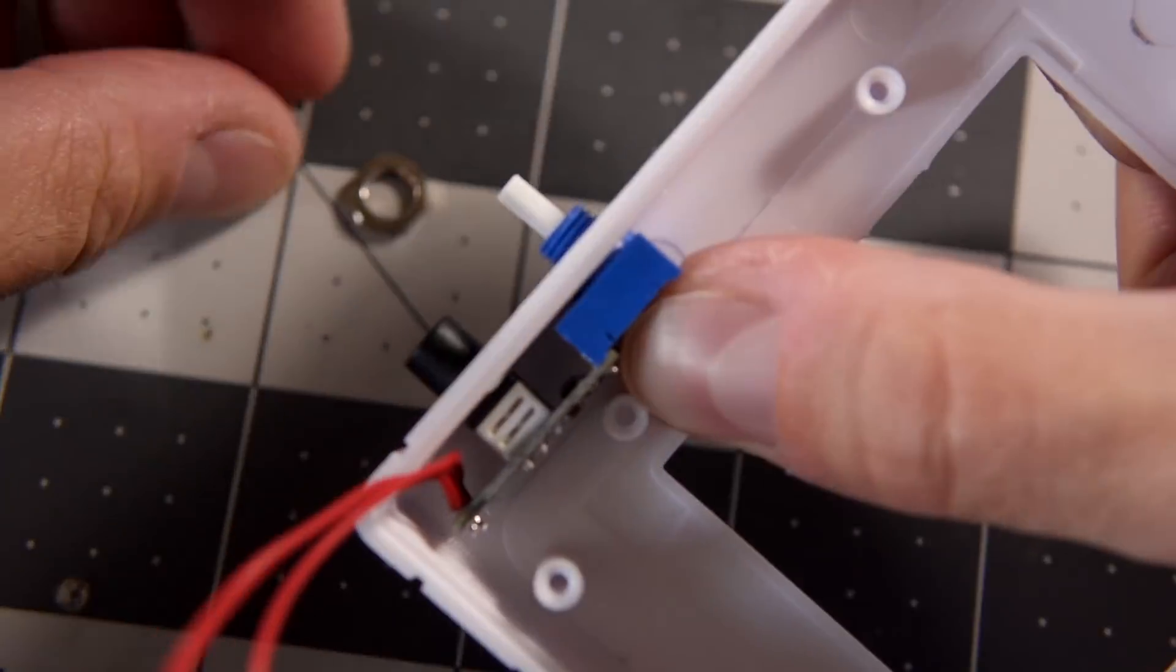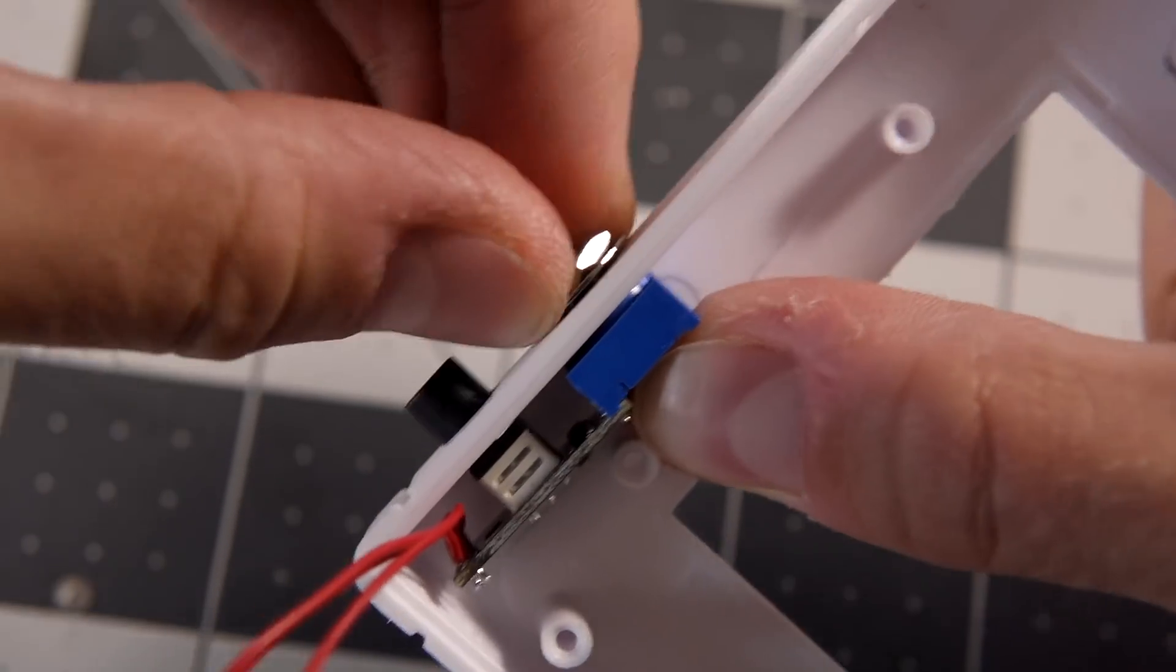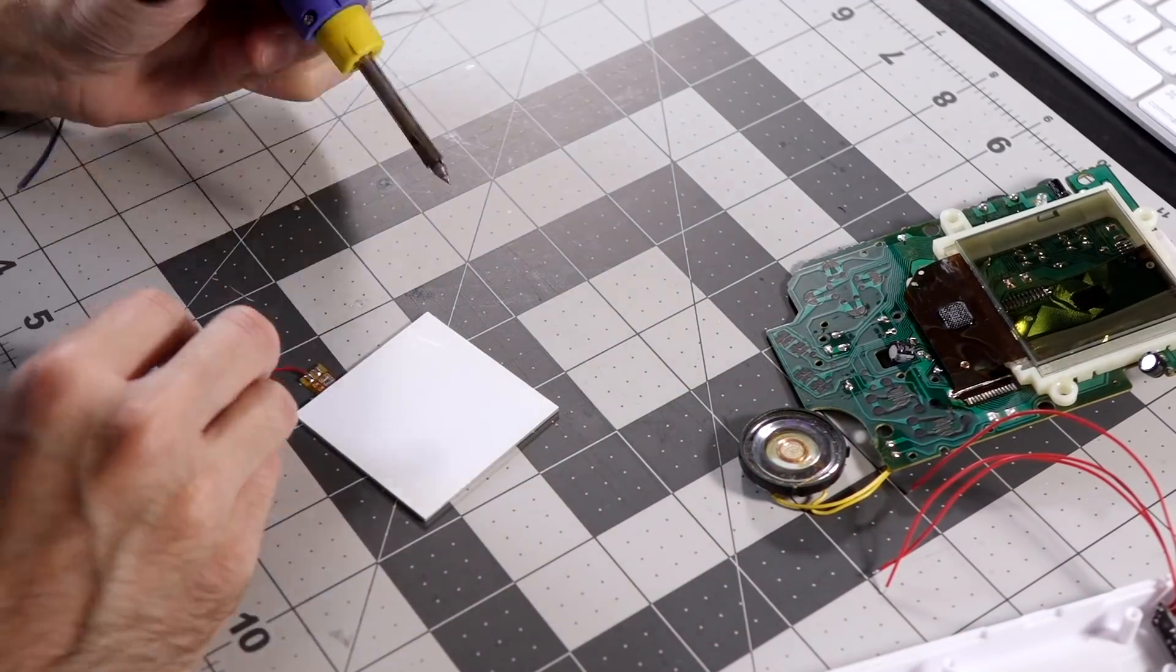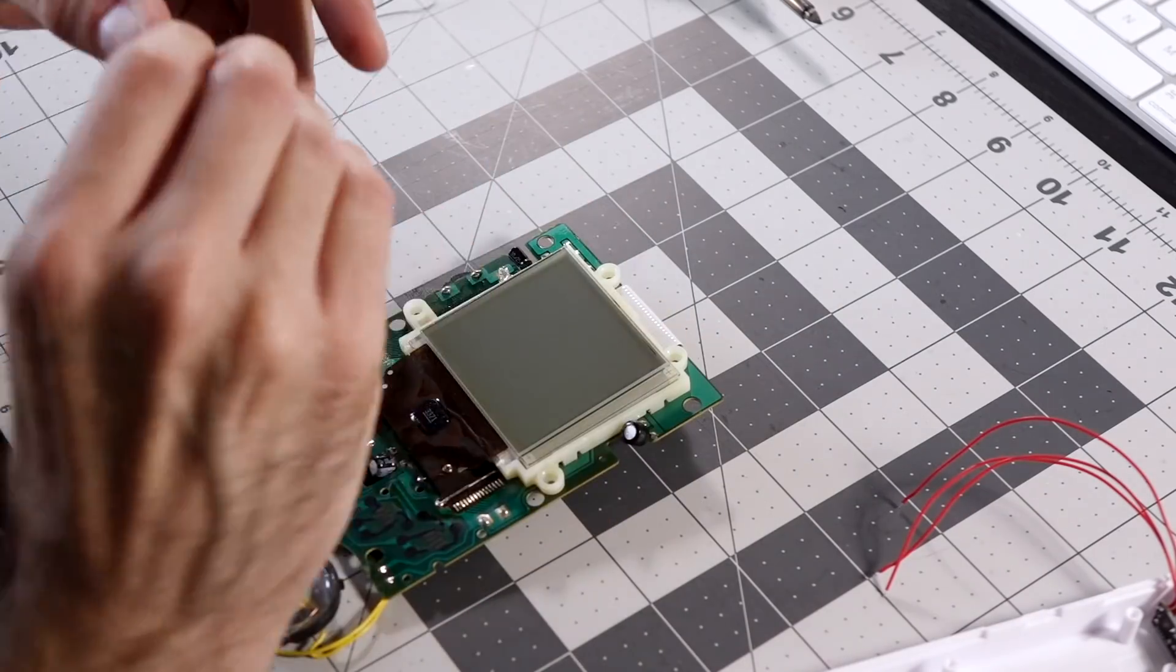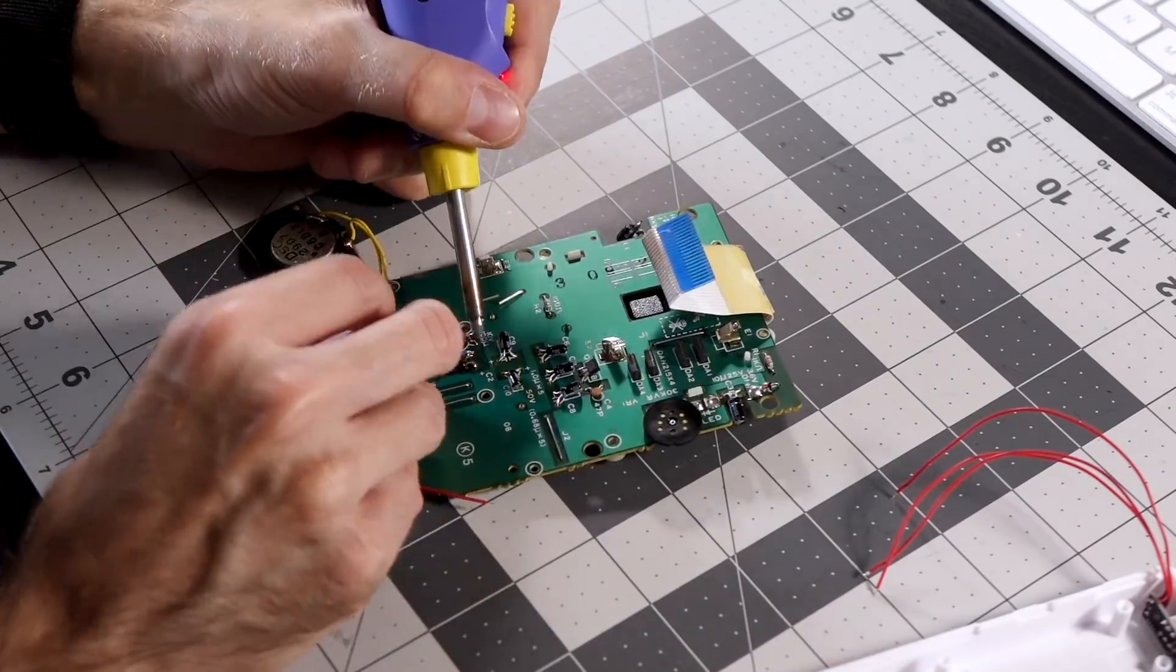Next, I installed the module in the front housing, and used the included washer and nut to hold it in place. At this point, I continued on with some other mods. I dropped in the replacement buttons, added a backlight, and soldered in a bivert chip for better contrast.